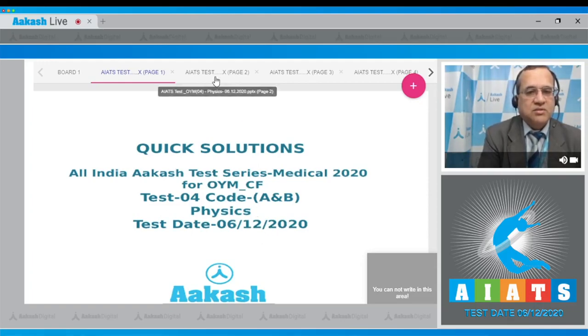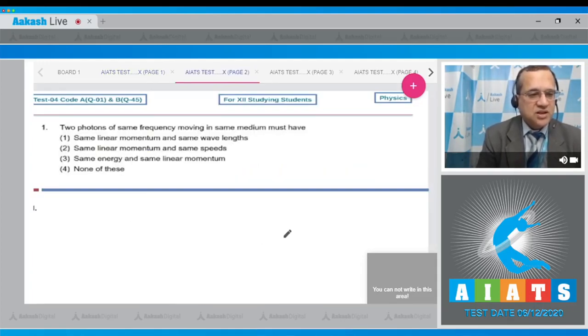The first question is: Two photons of the same frequency moving in the same medium must have - four options: same linear momentum and same wavelength, same linear momentum, same speeds, same energy and same linear momentum, or none of these.